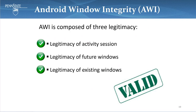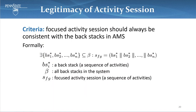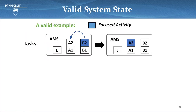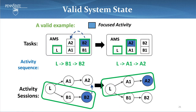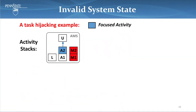Due to time limits, I will focus on the first criterion — please refer to the paper for the next two criteria. The criterion is that the focused activity session should always be consistent with the back stacks in the AMS. This is trying to ensure the history of user activities is consistent with the system state. Formally, there should always be a subset of back stacks that is consistent with the activity session. The example shows a valid case where the user wants to switch from B to A, and we find there exists an activity sequence consistent with the activity sessions. Here shows an invalid example where a task hijacking attack happened.